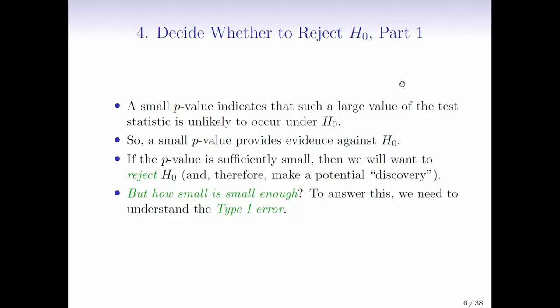But how small is small enough? Should we only reject the null hypothesis if the p-value is below 0.00001, or is it enough to reject the null hypothesis provided that the p-value is below 0.01? Oftentimes, 5% or 0.05 is used as a cutoff for rejecting a null hypothesis, but that's kind of just an arbitrary number that people use.